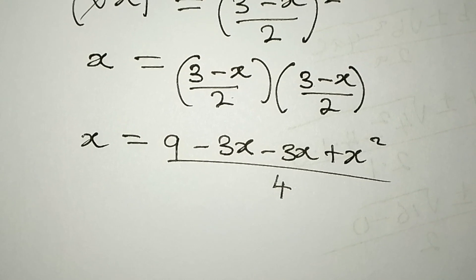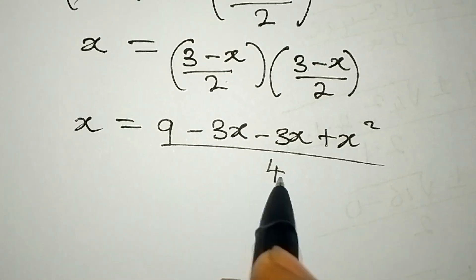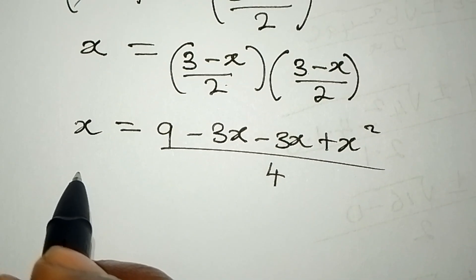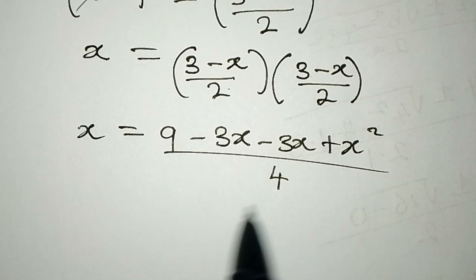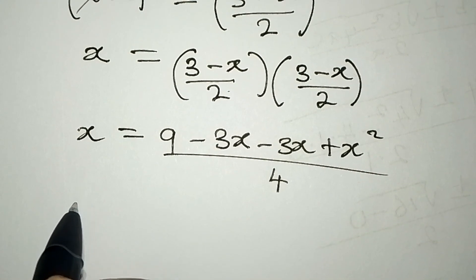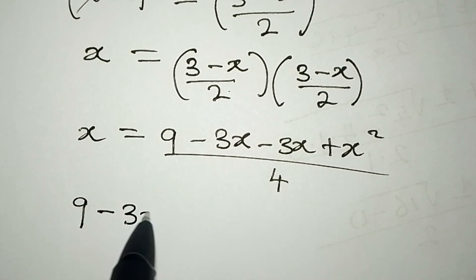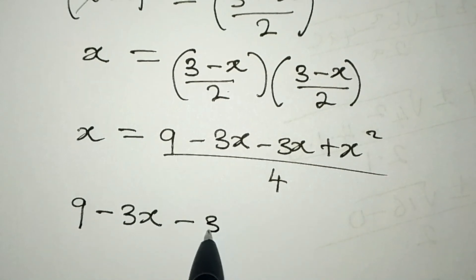Next, cross multiply to get 4x. First, we have 9 - 3x - 3x